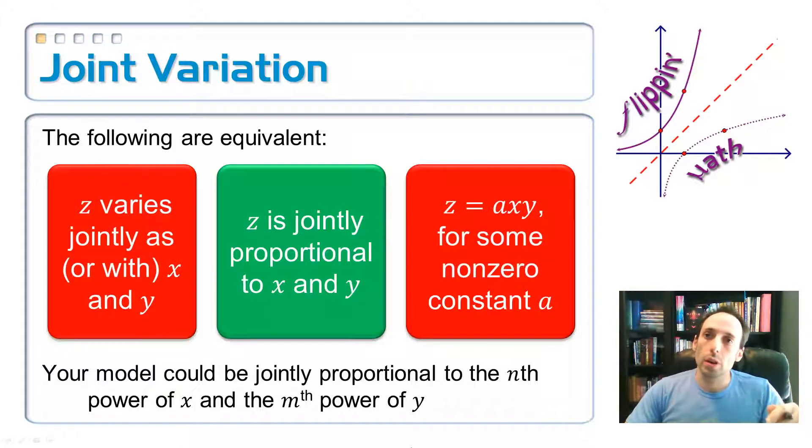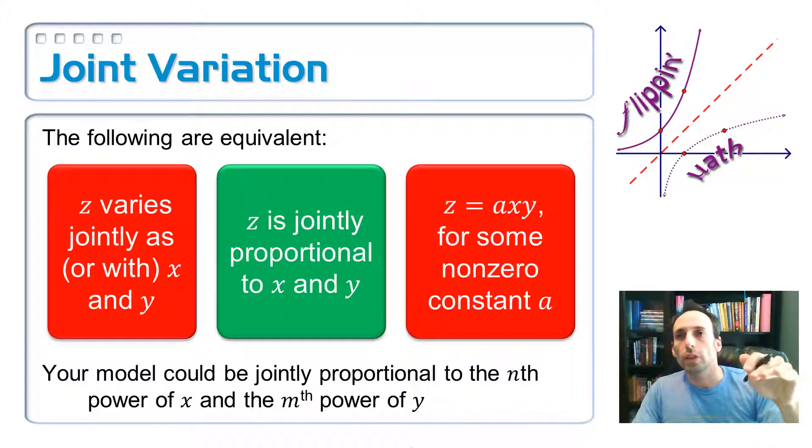And the way that I write the equation is it kind of looks like direct variation just with another variable being multiplied. So z is equal to a times x times y, where a is the constant variation. And just like you see down at the bottom there, you can have each one of those variables x and y raised to some other power. It doesn't have to be just to the first power.